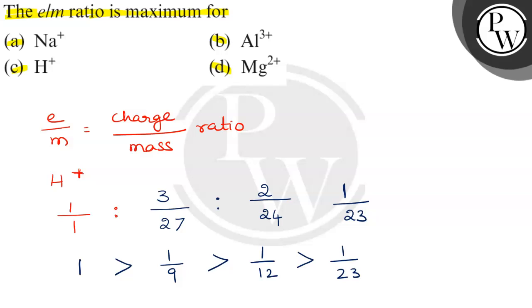And last one is this. So, this hydrogen is having more than Al plus 3, than Mg plus 2, than Na plus.